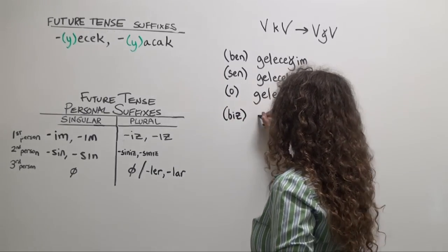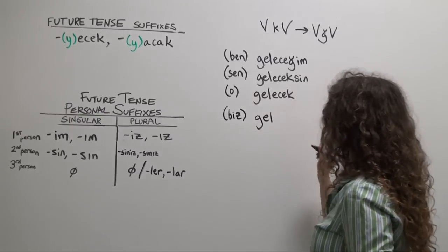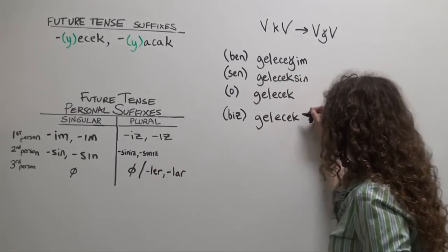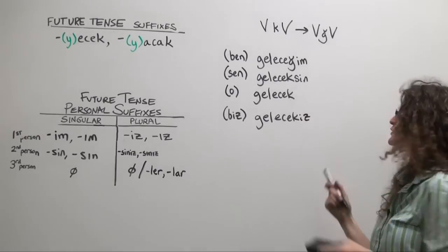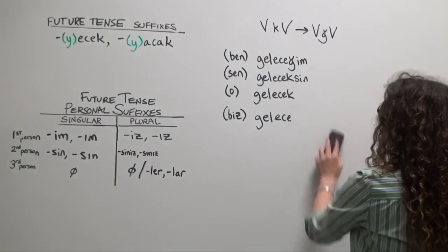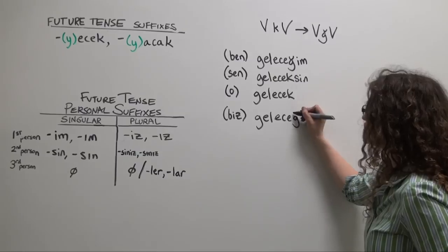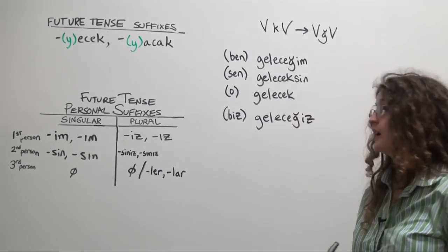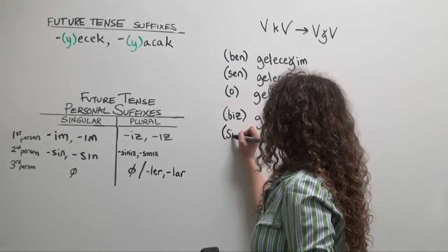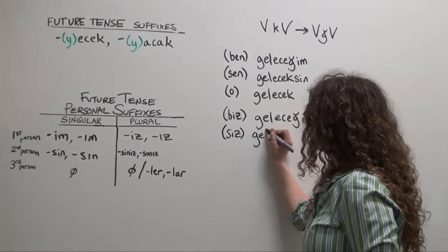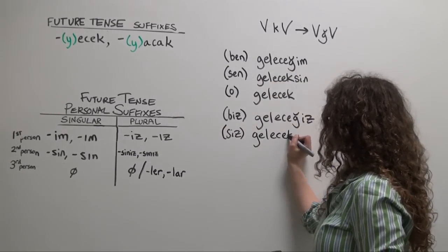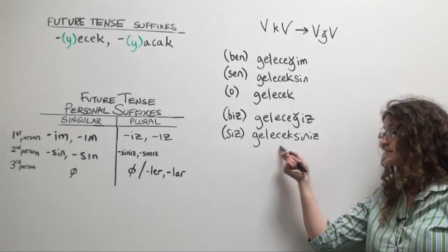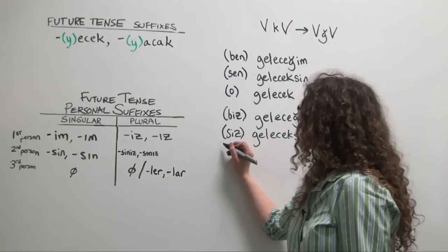Biz gel ecek. This k is sandwiched between two vowels. Biz geleceğiz. Biz geleceğiz. We will come. Siz gel ecek sınız. Notice that that k does not have to change because it's not between two vowels. And finally,